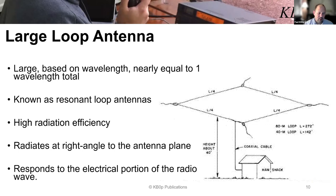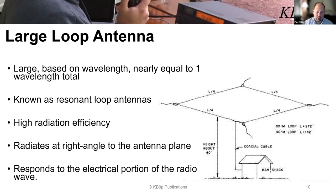Unfortunately, a large loop antenna responds largely to the electrical portion of the radio wave, because it's a resonant antenna. Even though it's a square loop and a complete circuit — essentially a dead short from ground to hot on your coax — it does largely respond to the electrical portion of the wave. That's where a lot of man-made interference and noise resides. And because it responds to the electrical portion, it also couples itself to other metal objects in the area, which is why you pick up extra noise.